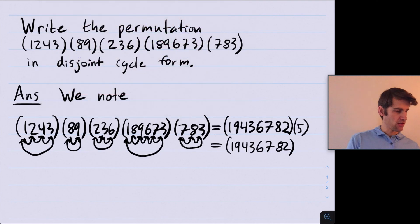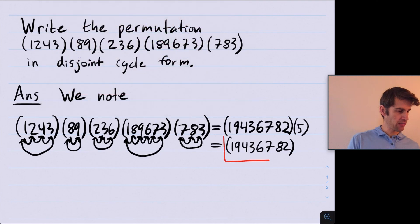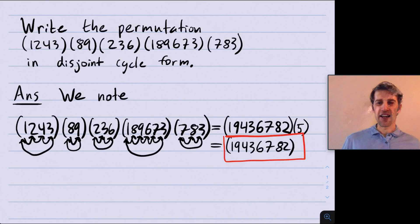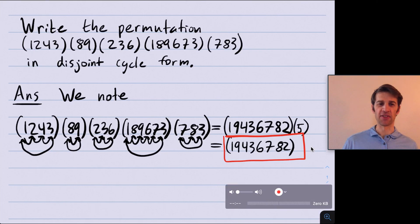So this is our final answer. We've written this permutation as a product of disjoint cycles — it happens to just be one cycle.